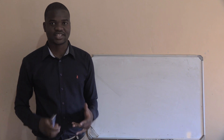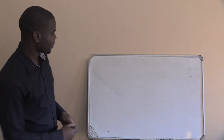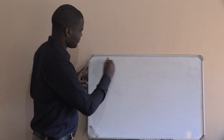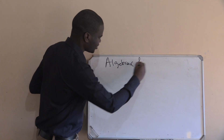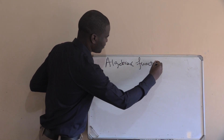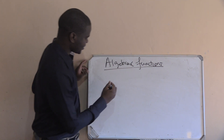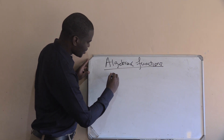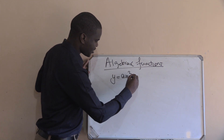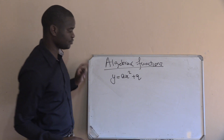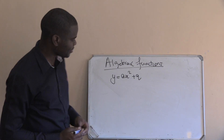Before we start, it's a very, very good topic — parabola. Algebraic functions. We are going to be looking at the graph y is equal to ax squared plus q.